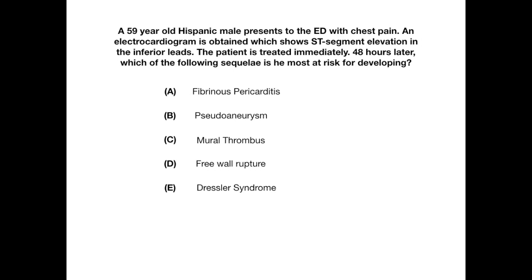If you haven't already studied all of your review source content, you might not know what's going on here. But the key is what's highlighted in red: an ECG shows ST segment elevation in the inferior leads. That's another way of saying this patient is having a myocardial infarction — a heart attack. And within 48 hours, they're asking what complication of a heart attack might you expect to see?